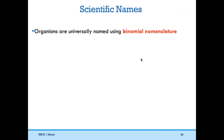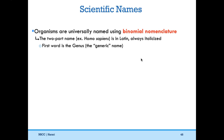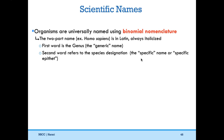The way we name organisms is using binomial nomenclature — a two-part name that is always italicized and in Latin. The first word is the genus, also called the generic name. The second word refers to the species designation, or specific epithet. So for humans, Homo is the generic name and sapiens is the species designation — Homo sapiens. The genus is always capitalized and the specific name is always lowercase. To abbreviate, we use the capital letter of the genus followed by the specific name, so H. sapiens.